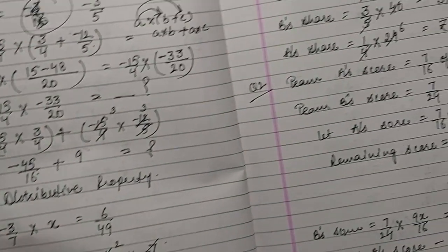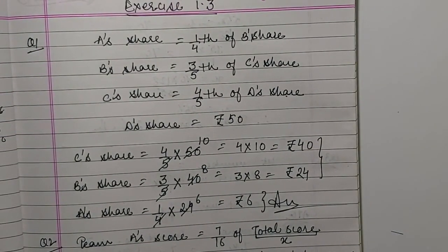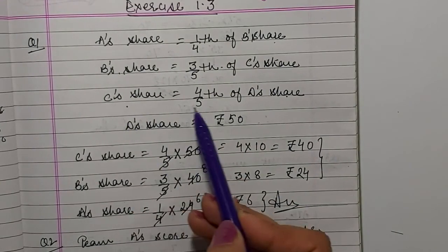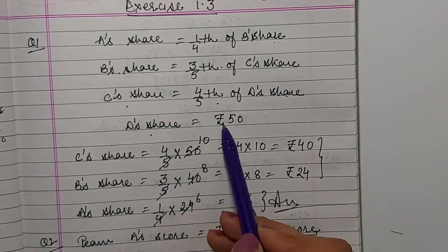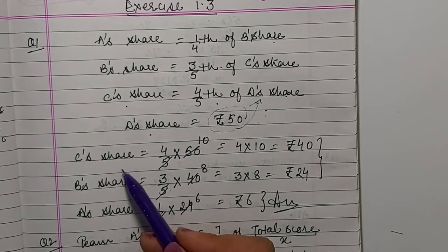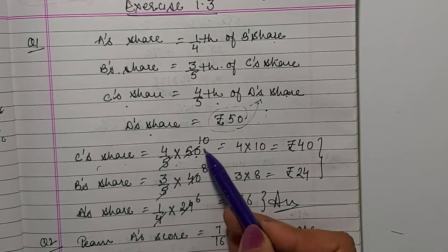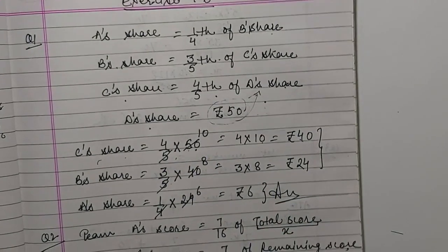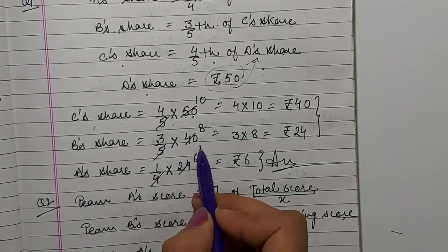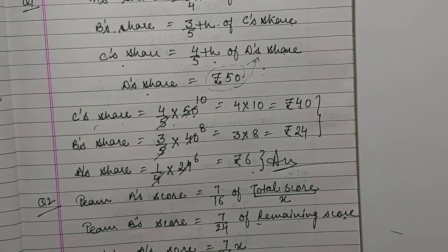Moving on to the next exercise: word problems on rational numbers — only 5 questions, then our chapter is complete. Question 1: A's share is one fourth of B's share. B's share is 3 by 5 of C's share. C's share is 4 by 5 of D's share. D's share is rupees 50. C's share = 4 by 5 into 50 = rupees 40. B's share = 3 by 5 into 40 = rupees 24. A's share = 1 by 4 into 24 = rupees 6.